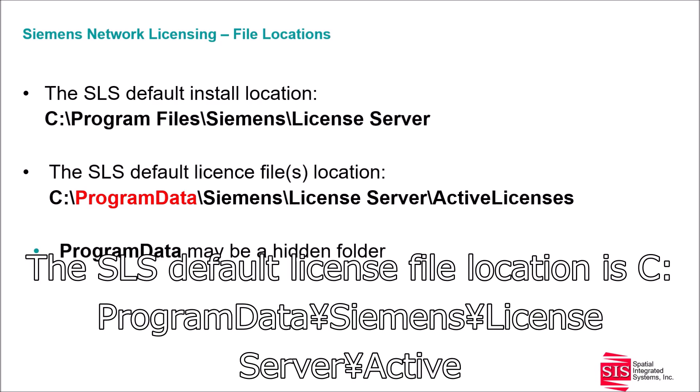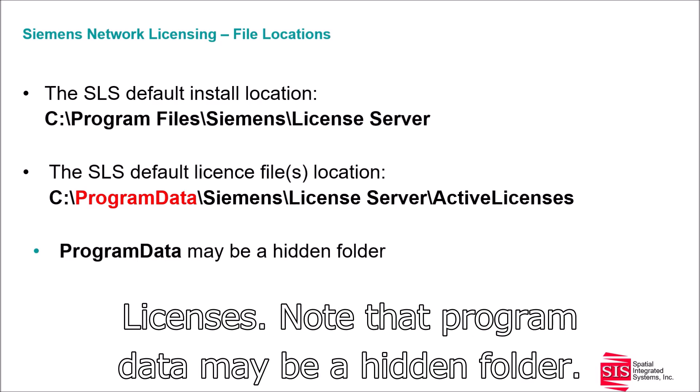The SLIM default license file location is C:\ProgramData\Siemens\License Server\Active Licenses. Note that Program Data may be a hidden folder.